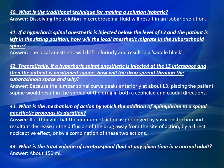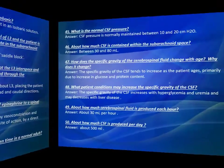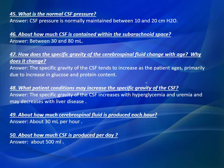Question Number 44: What is the total volume of cerebrospinal fluid at any given time in a normal adult? Answer: About 150 milliliters. Question Number 45: What is the normal CSF pressure? Answer: CSF pressure is normally maintained between 10 and 20 centimeters H2O. Question Number 46: About how much CSF is contained within the subarachnoid space? Answer: Between 30 and 80 milliliters. Question Number 47: How does the specific gravity of the cerebrospinal fluid change with age and why? Answer: The specific gravity of the CSF tends to increase as the patient ages, primarily due to an increase in glucose and protein content.